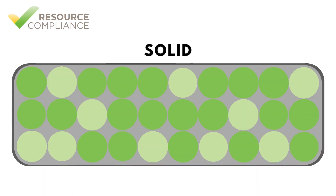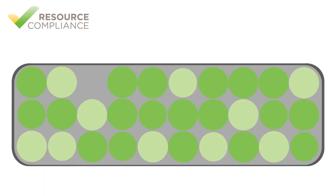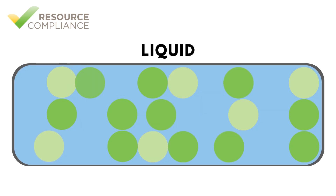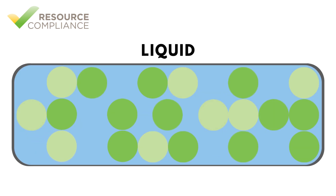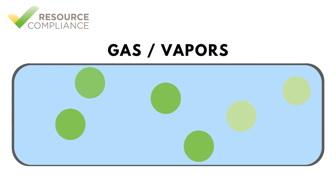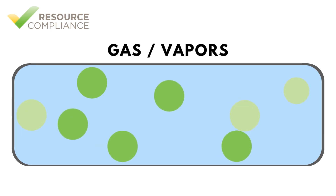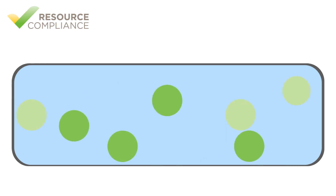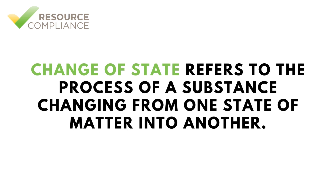In solid materials, molecules are tightly packed together. In liquids, the particles can move more freely and slide past each other. In gases or vapors, the molecules are moving very fast and have even greater spacing from each other.